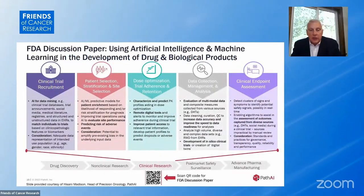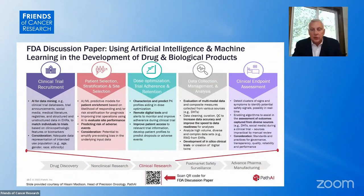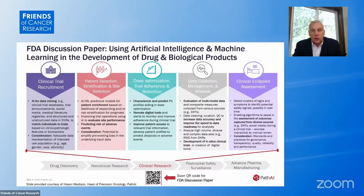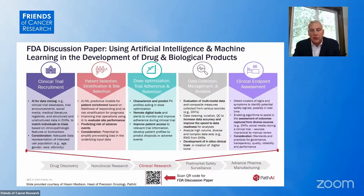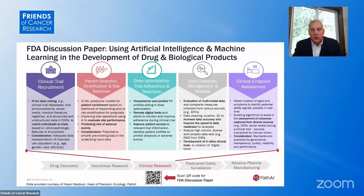A summary of the FDA guidance just published on using AI in drug development covers clinical trial requirements, patient selection, dose optimization, data collection, and clinical trials. This is a very rich discussion paper and is really the basis for a lot of progress going forward.